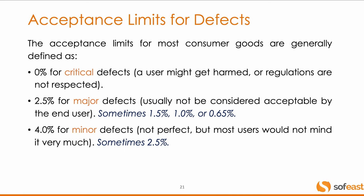People usually follow the same way of classifying defects: critical defects, major defects, minor defects. For each of them you want to set a limit. It's 0% for critical — these are things you absolutely cannot accept. 2.5% for major defects — these are typically what a consumer in a store would notice and not buy the product, or might send it back. And then minor defects — these are really imperfections; you don't want too many of these. These are very typical acceptance limits, though it does vary.